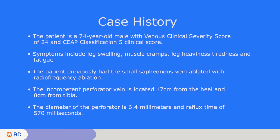The patient previously had the small saphenous vein ablated with radiofrequency ablation. The incompetent perforator vein is located 17 centimeters from the heel and 8 centimeters from the tibia. The diameter of the perforator is 6.4 millimeters and reflux time 570 milliseconds.